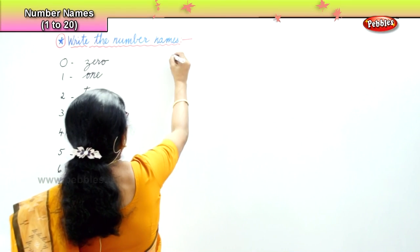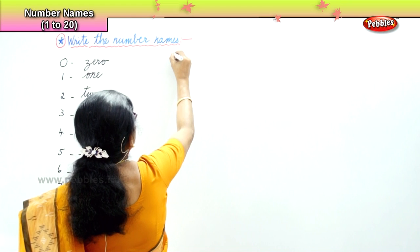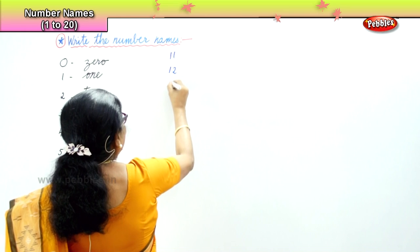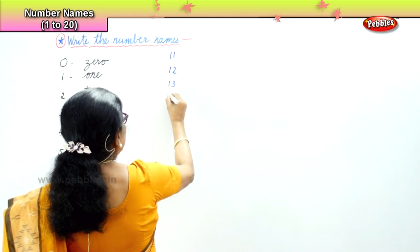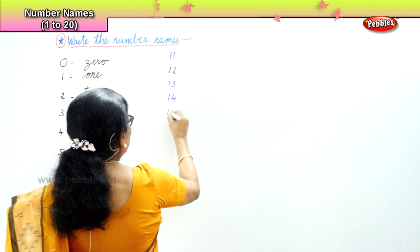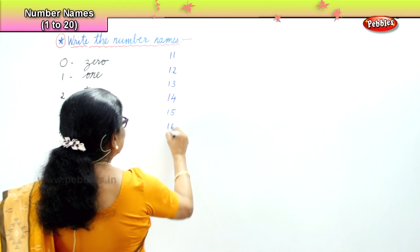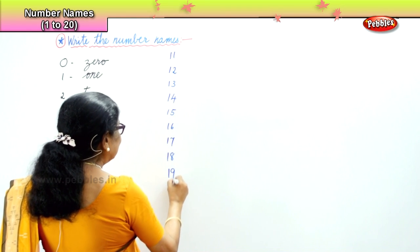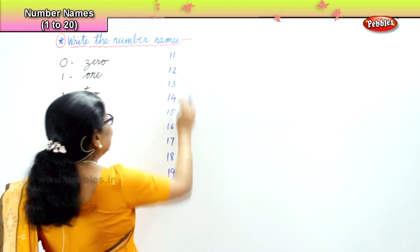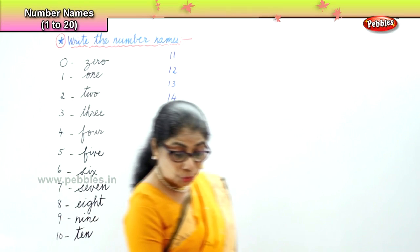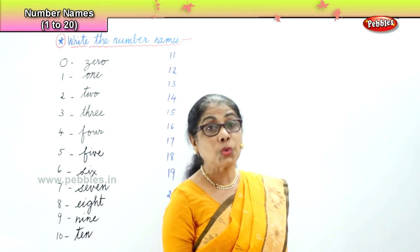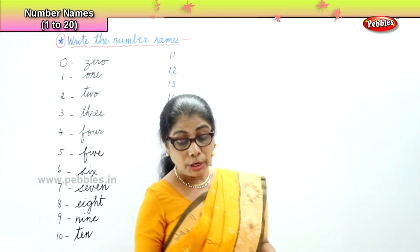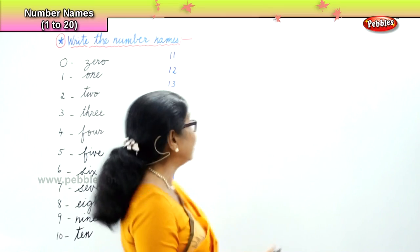Next, we need to do number names 11 to 20. It's a very interesting set: 11, 12, 13, 14, 15, 16, 17, 18, 19, 20. These number names — you can make a mistake. It's quite difficult, and so you need to learn to write them several times before you get it correct.